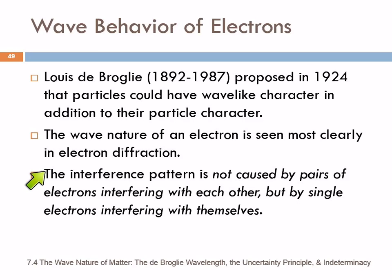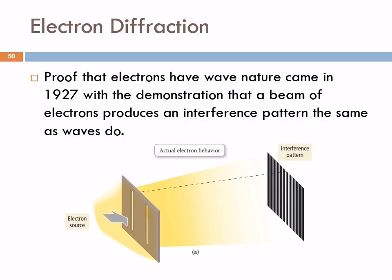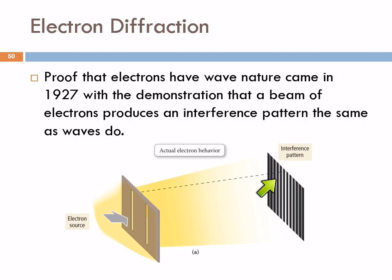We observe that an interference pattern similar to what's observed with light forms. It's important to understand this is caused not by pairs of electrons interfering with each other, but single electrons interfering with themselves. That's the wave nature of the electron, and this experiment was proof. In the double-slit experiment, electrons are shot at a barrier with two slits, and what is observed is an interference pattern similar to what is observed with light, indicating that electrons are behaving as waves.